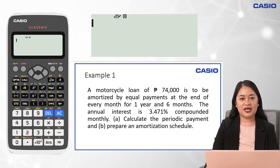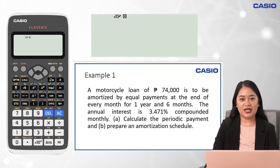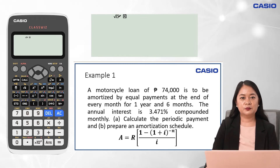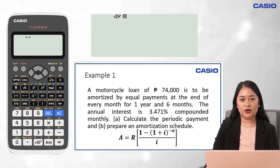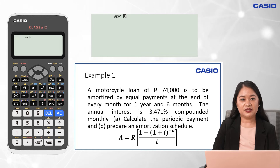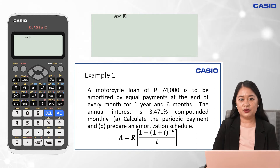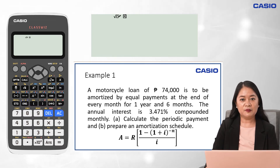Before constructing an amortization schedule, we need to calculate first the periodic payment. Since this problem involves simple ordinary annuity, we will use this formula. The present value of the simple ordinary annuity equals the periodic payment multiplied by the quantity of 1 minus (1 plus i) raised to the negative n, all over i. Where i is the periodic rate, computed by dividing the annual interest rate by the number of conversion periods per year, and n is the total number of conversion periods for the whole term, computed by multiplying the number of conversion periods per year and the period of time in years.